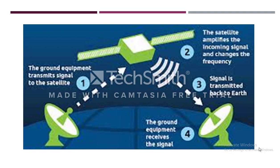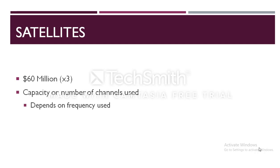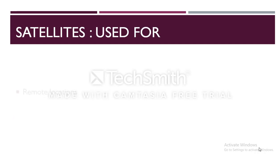Such satellites can cost 16 million dollars to build, but only three of them are needed to cover the entire Earth's surface. The capacity or number of channels used in satellite communication depends on the frequency used. Typical data transfer rates are 1 to 10 Mbps. Satellites are especially used for remote locations which are difficult to reach with wired infrastructure. Also, communication and data transfer on the internet is only possible through satellites.